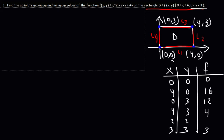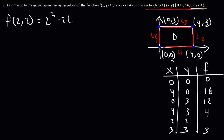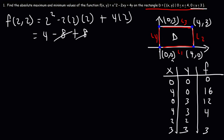The only remaining thing is to plug in the critical point (2, 2) into the original function: 2 squared minus 2 times 2 times 2 plus 4 times 2 = 4 minus 8 plus 8 = 4. Looking at the table, the absolute maximum is located at (4, 0) with a value of 16, and the absolute minimum is located at the origin (0, 0) with a value of 0. That's why I like to use the table — it makes it very easy to identify the absolute maximum and minimum values.